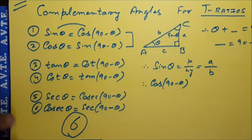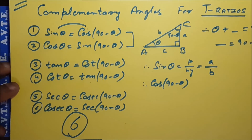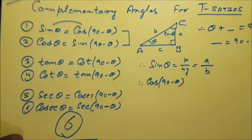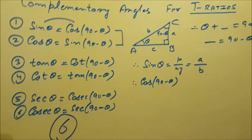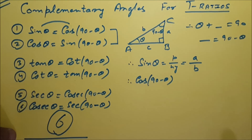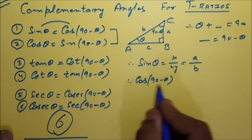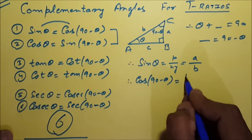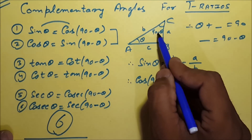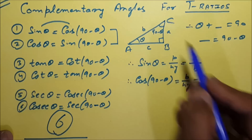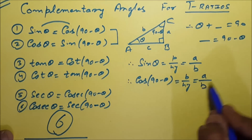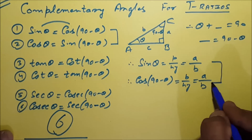So cos(90 minus theta) is base upon hypotenuse. For the angle 90 minus theta, the base is side A and the hypotenuse is side B — hence sin theta and cos(90 minus theta) are equal.